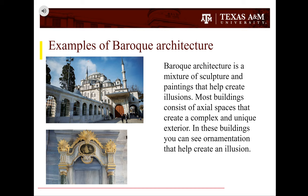In this slide, you will find some examples of Baroque architecture. Baroque architecture is a mixture of sculpture and paintings that help create illusions. Most buildings consist of actual spaces that create a complex and unique exterior. In these buildings, you can see ornamentation that helps create an illusion.